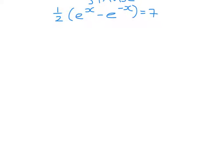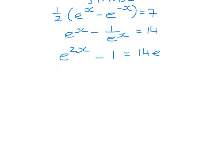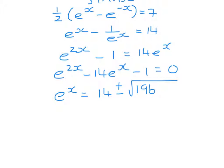So e to the x minus 1 over e to the x equals 14. Multiplying through by e to the x, we get e to the 2x minus 1 equals 14 e to the x. e to the 2x minus 14 e to the x minus 1 equals 0. So e to the x equals minus b plus or minus the square root of b squared minus 4ac all over 2a. So that's 14 plus or minus root of b squared.